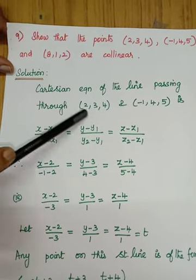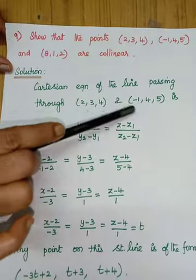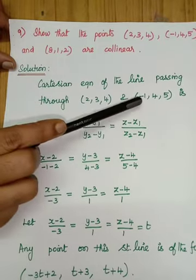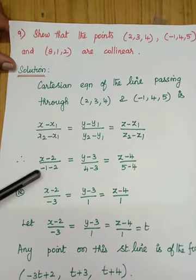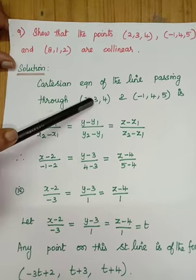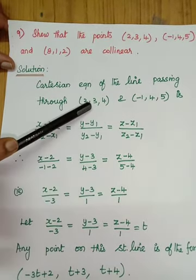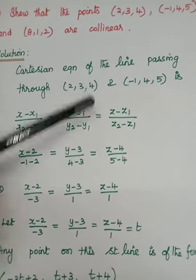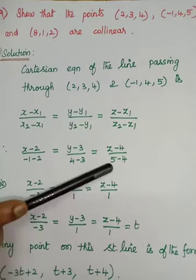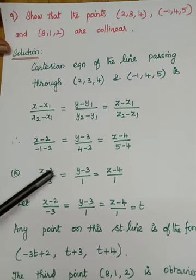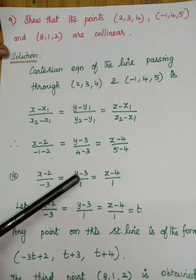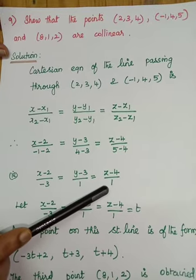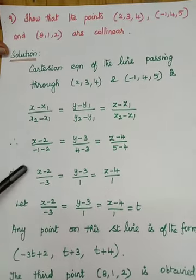Considering (2, 3, 4) as (x1, y1, z1) and (minus 1, 4, 5) as (x2, y2, z2), substituting gives: (x minus 2)/(minus 1 minus 2) = (y minus 3)/(4 minus 3) = (z minus 4)/(5 minus 4), which simplifies to (x minus 2)/(minus 3) = (y minus 3)/1 = (z minus 4)/1.